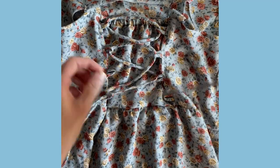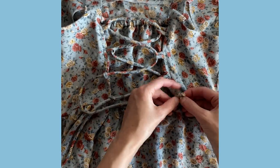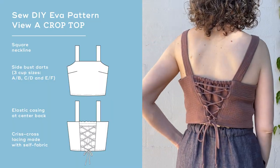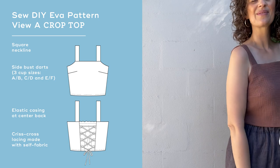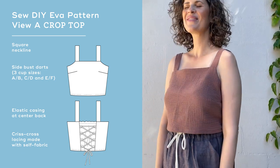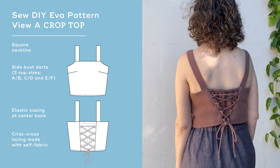The Eva features a square neckline, straps, side bust darts, and it's fitted at the back with a combination of narrow elastic and crisscross lacing.